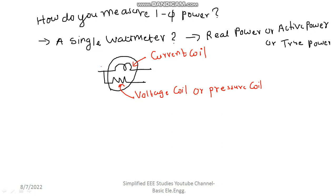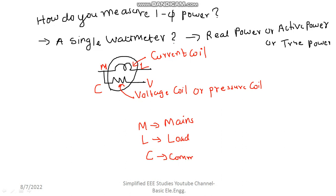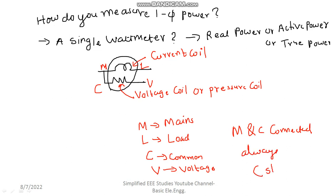The wattmeter has four terminals: M, L, C, and V. M stands for mains or supply, L stands for load, C stands for common, and V stands for voltage. These labels help for easy connection. Remember always — M and C are always connected or shorted. You have to short them using a small wire. M and C should be connected to each other.